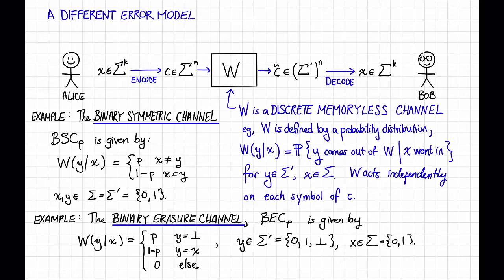Both the BSC and the BEC are very natural channel models, and they're different from the models of errors and erasures that we've been looking at so far. In this case, the channel w is not nefarious — it's random. Moreover, it's going to corrupt each symbol independently of all of the other ones. In that sense, this model is somewhat easier than the adversarial model we've been looking at before, so we expect to be able to get stronger guarantees in this model. And in fact, that's true.